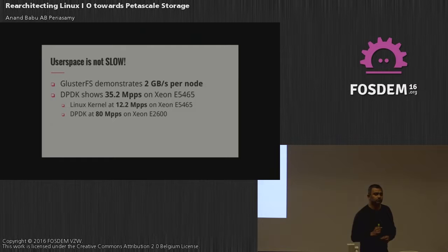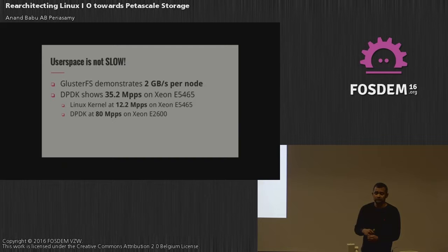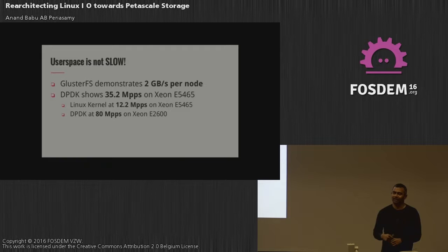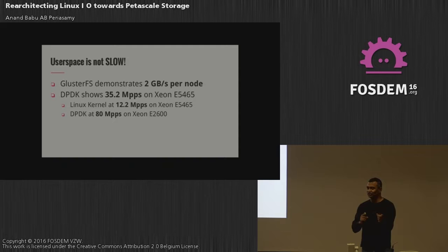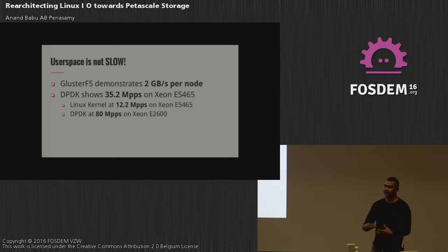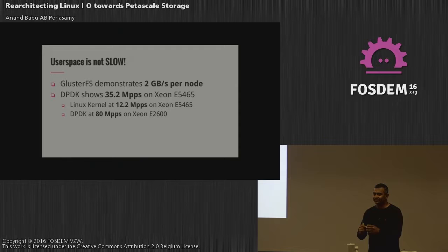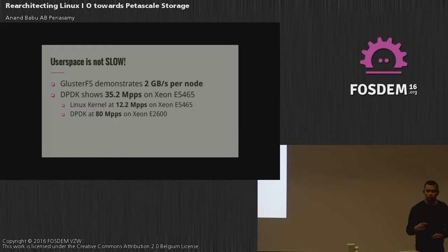The first thing people think about user space file systems is that they are slow. Some common things I heard when I did Gluster: 'it will take 10 years to get POSIX right,' and 'other file systems like Lustre will be way ahead.' My point was that I wanted something simple that just works. Gluster has nothing to do with Lustre — no code sharing. The name Gluster came from GNU Cluster, and it was originally supposed to be a user space distributed operating system inspired by Hurd.